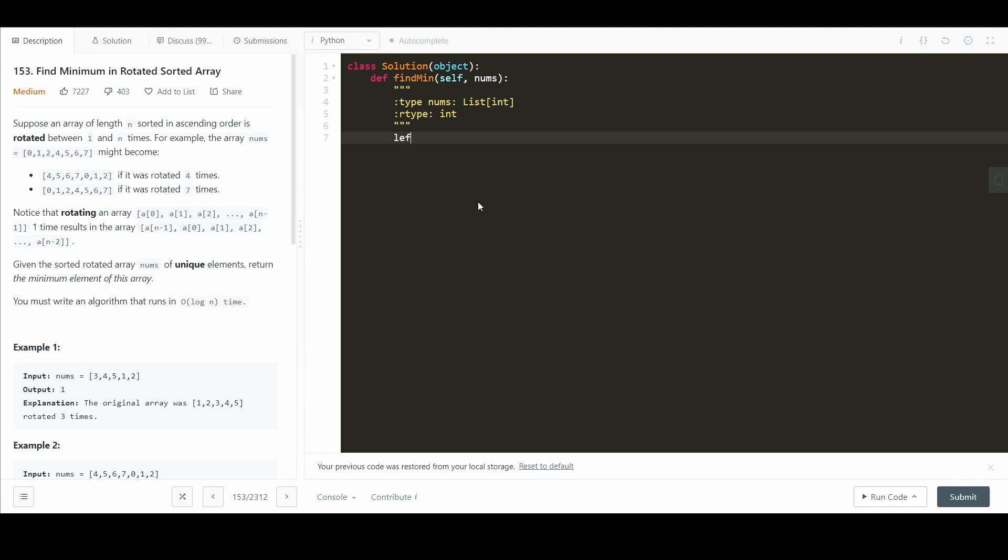Okay, first thing we do is define left equal to zero and right equal to the length of nums minus one. This is how we're going to define the size of the current array that we're checking. Now while left is less than right, not less than or equal to because less than or equal to would make the loop go on forever.